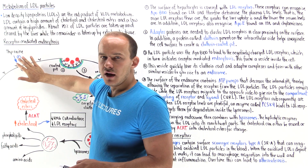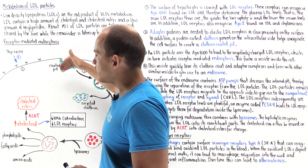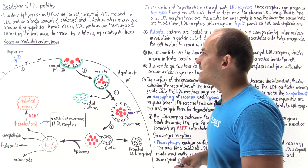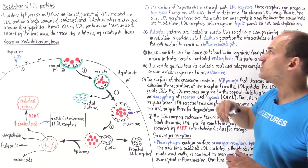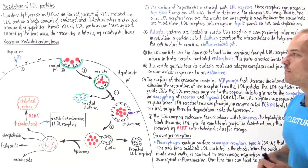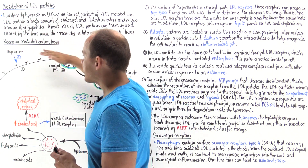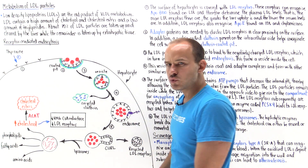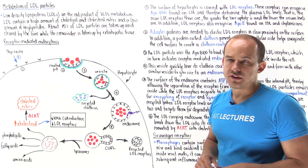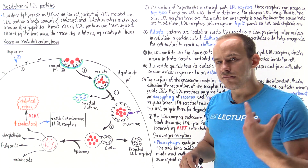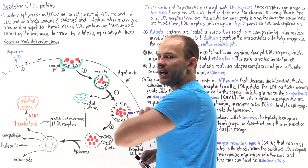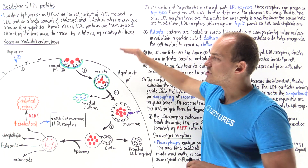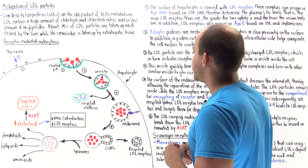Everything begins on the surface of the liver cell. On the surface, we have these negatively charged glycoproteins known as LDL receptors. These LDL receptors can recognize and bind apolipoprotein B100 that is found on LDL. The more of these LDL receptors we have on the surface of the liver cell, the more LDL particles we're going to absorb from the bloodstream, and the lower the amount of LDL present inside the bloodstream. Conversely, if we have few LDL receptors, we won't absorb as much LDL into the liver cell, increasing LDL levels in our blood.